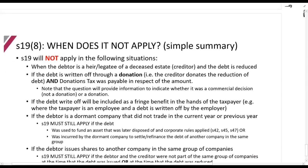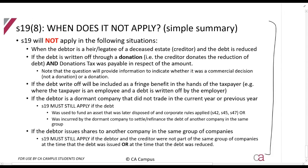Section 19 does not always apply — section 19.8 lists the exclusions. One of the most important: if a creditor writes off the debt as a genuine donation and donations tax is payable on it, then section 19 does not apply, because there is already some form of tax being paid. In questions, you will be told whether it is a commercial decision — if it is, it is not a donation, so section 19 and paragraph 12A will apply. But if it is a proper donation with donations tax payable, this section will not apply.